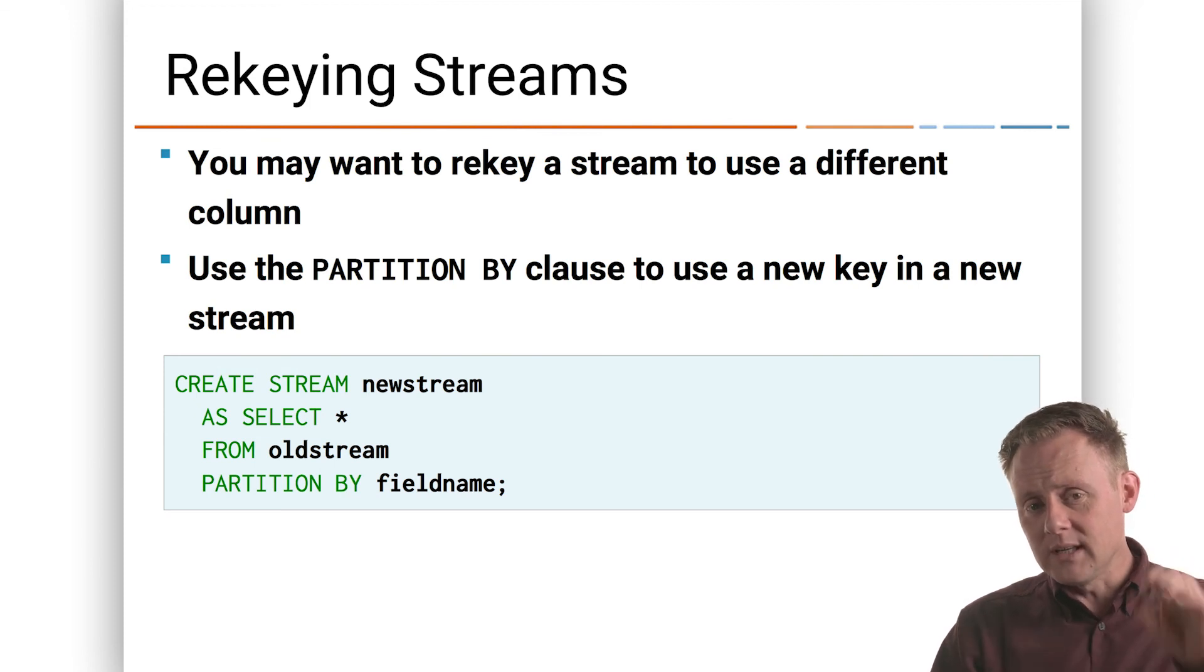There's a field in that value in the JSON or Avro value inside the messages of that stream. There's a field that we want to partition by. So effectively we're re-partitioning the stream. Now this isn't Kafka rocket science to do this with a producer and a consumer, but it's a lot harder than this right here.